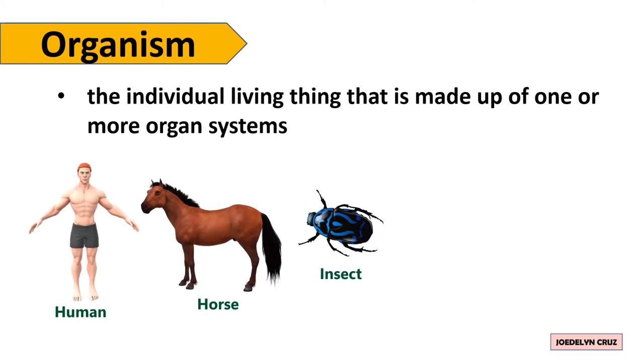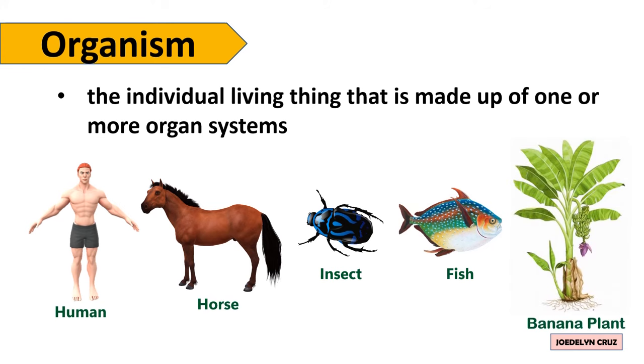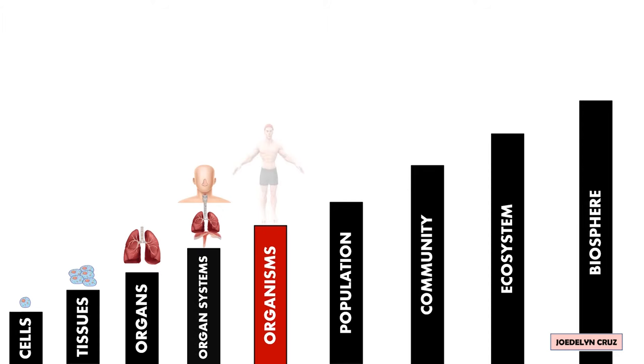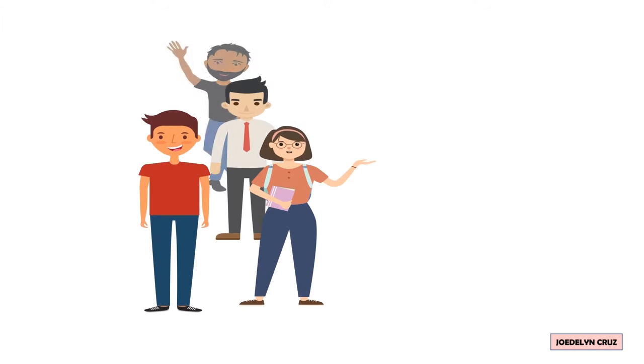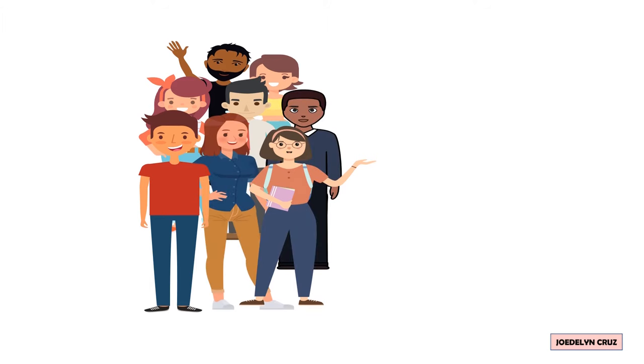insect, fish, and banana plant. Thus, after organ systems are organisms.